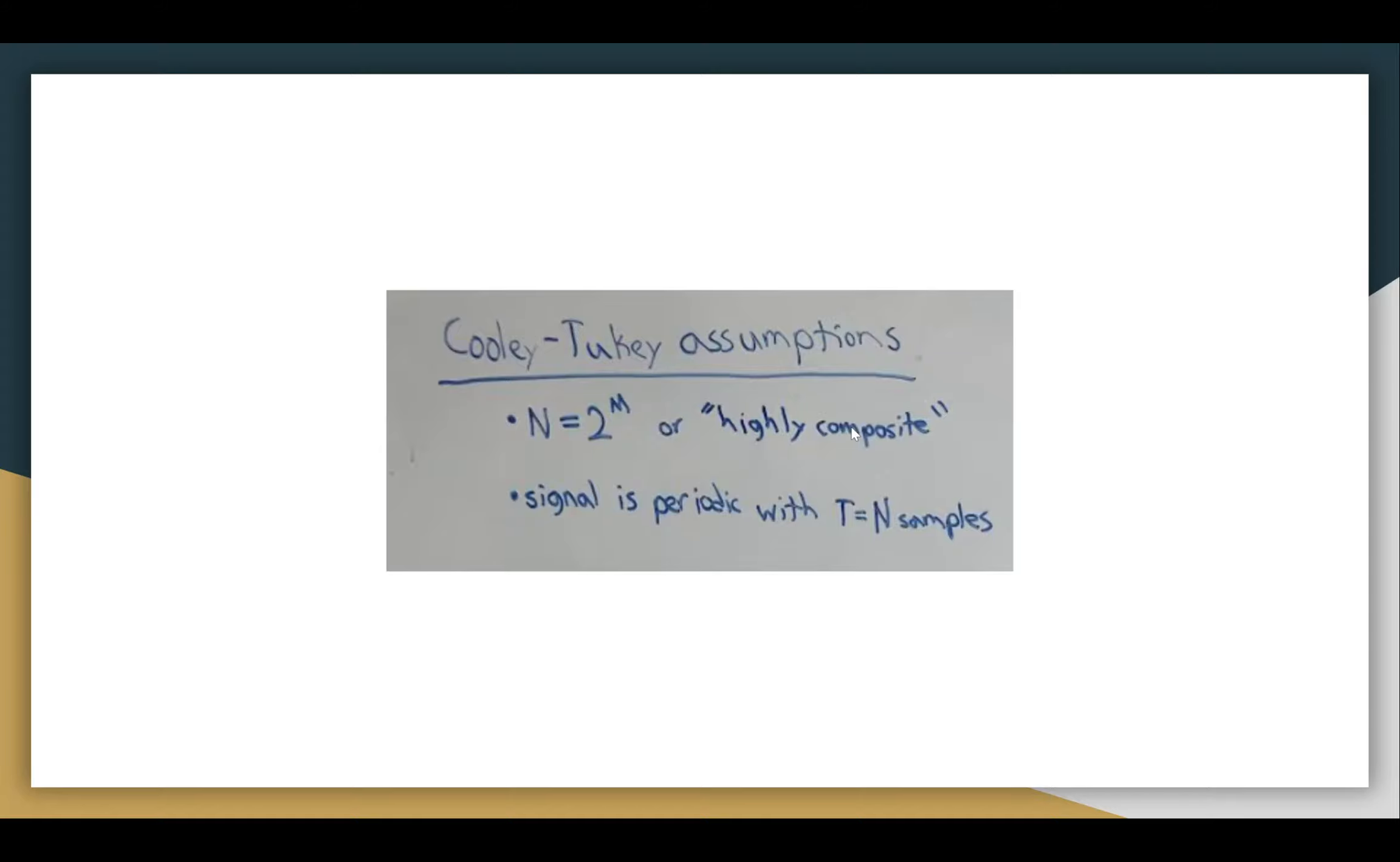It takes care of preventing issues that come with having something that isn't highly composite. And also that the signal is periodic within samples. This is because in the discrete Fourier transform, it's done over one period. Mathematically, it actually assumes that the signal is periodic over that span.